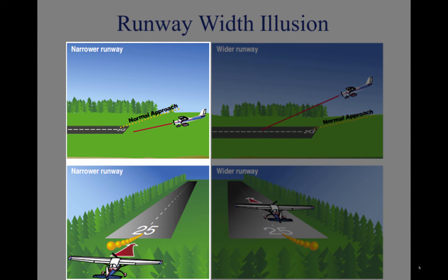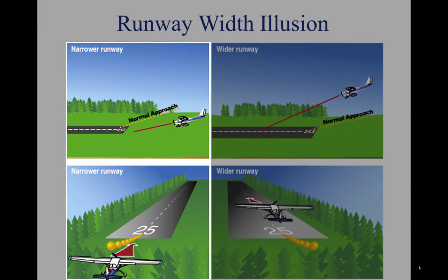A narrower-than-usual runway can create an illusion the aircraft is at a higher altitude than it actually is, especially when runway length-to-width relationships are comparable. The pilot who does not recognize this illusion will fly a lower approach, with the risk of striking objects along the approach path or landing short.